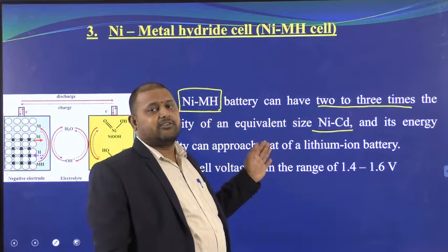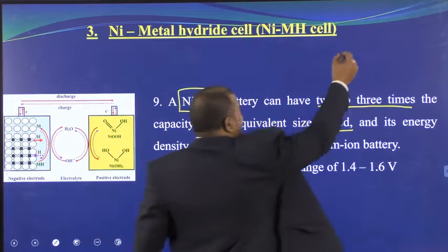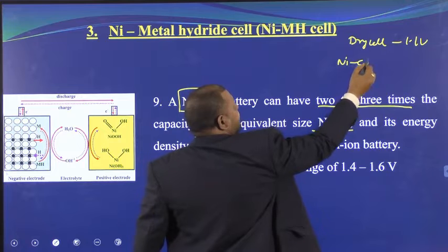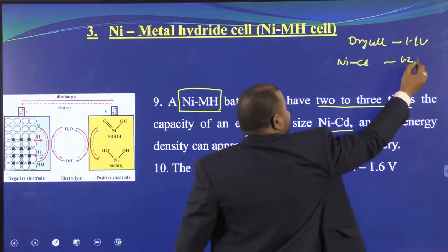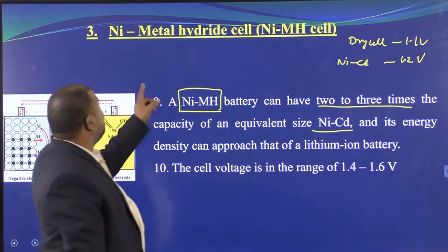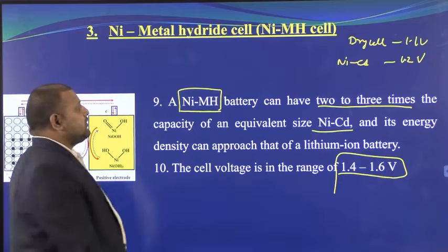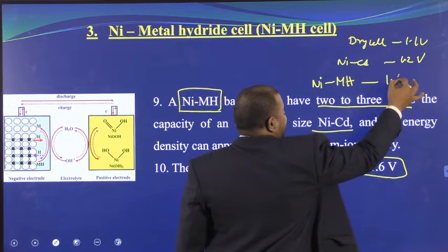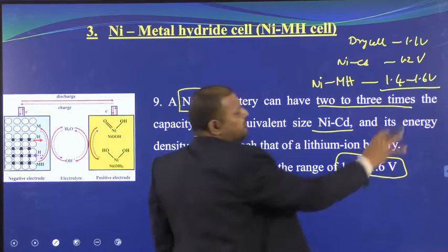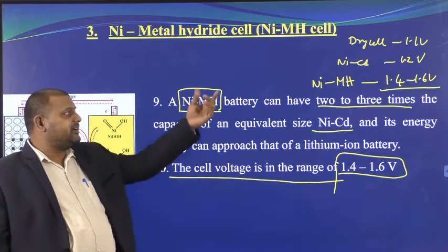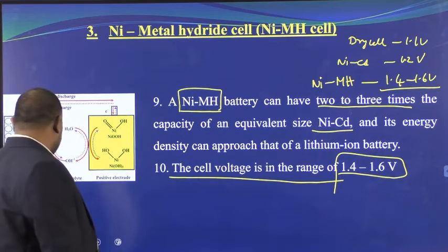You should be thorough with nickel metal hydride battery. It has two to three times the capacity of nickel cadmium battery — that is why it has become more popular. The output voltage: dry cell = 1.1 V, nickel cadmium = 1.2 V, nickel metal hydride = 1.4 to 1.6 V. This higher cell voltage is why nickel metal hydride batteries are gaining importance.